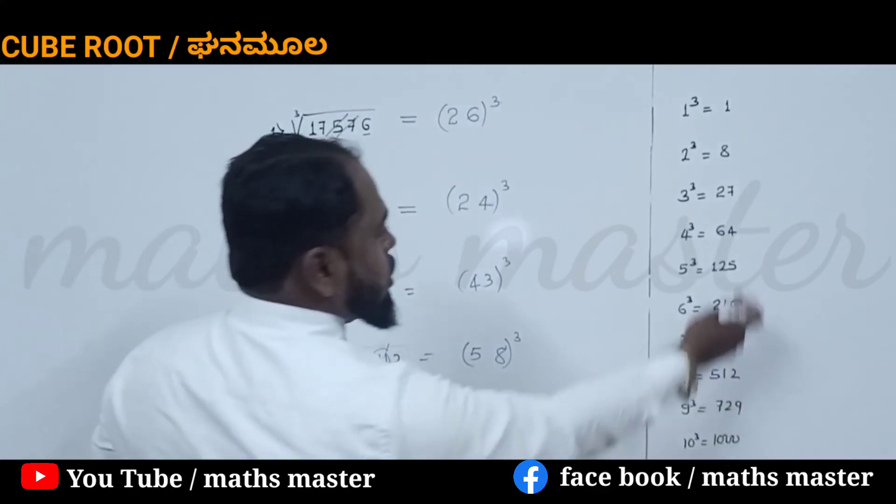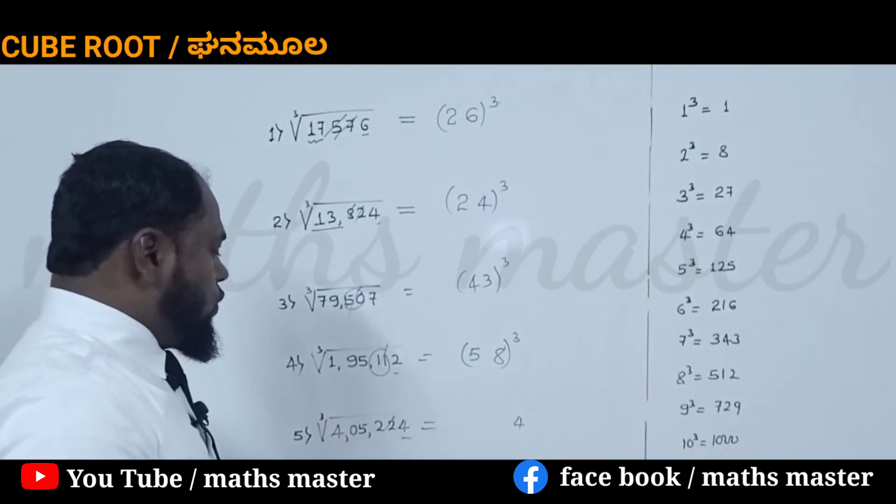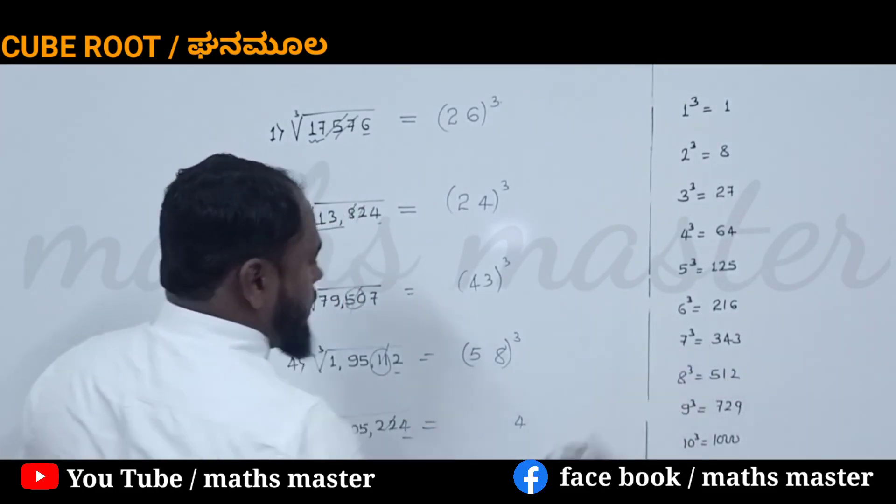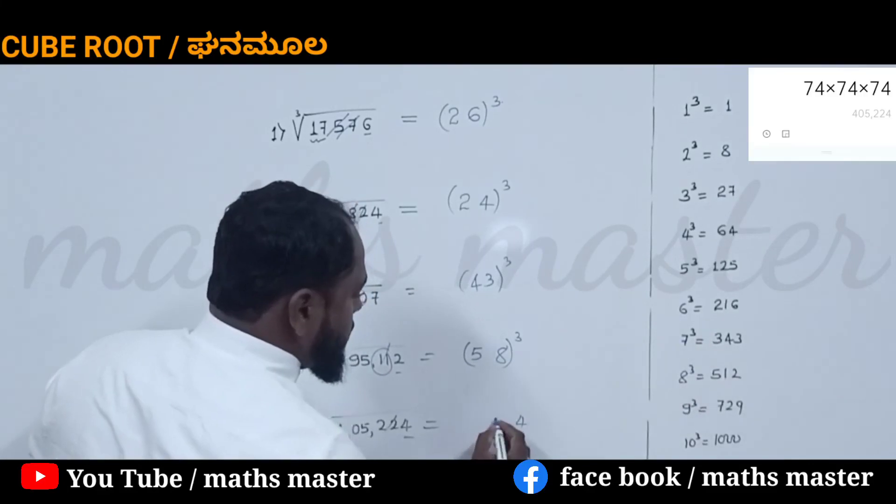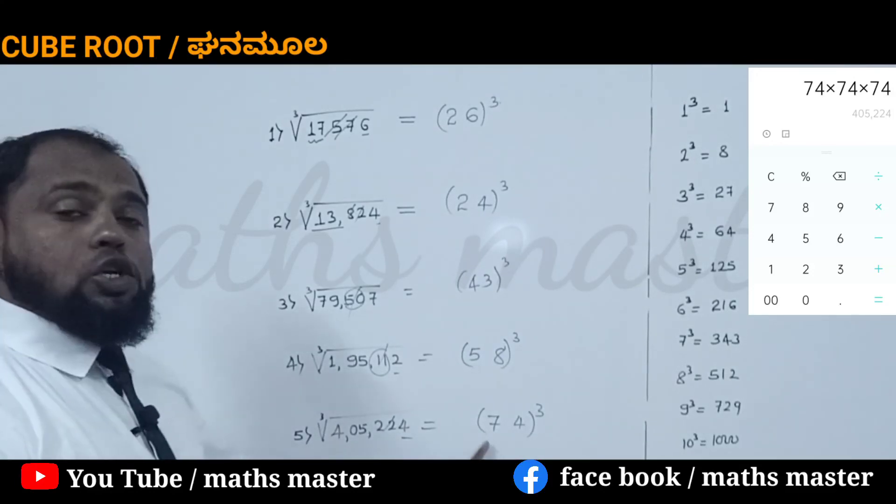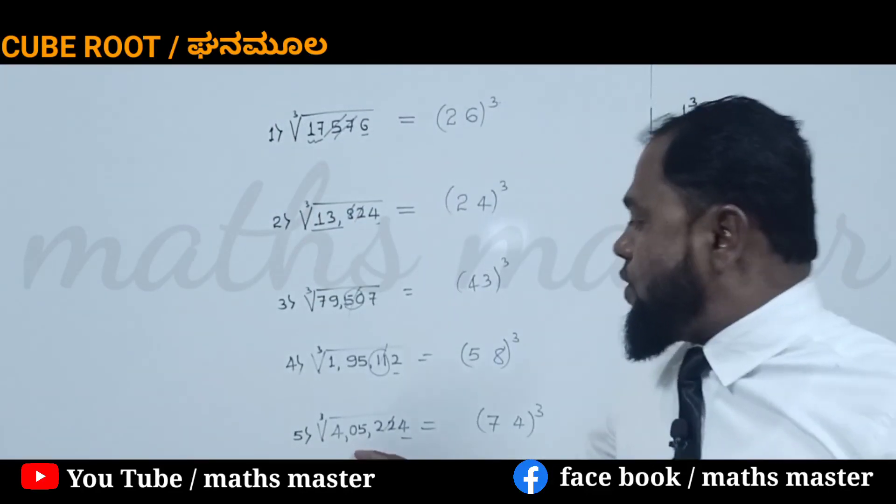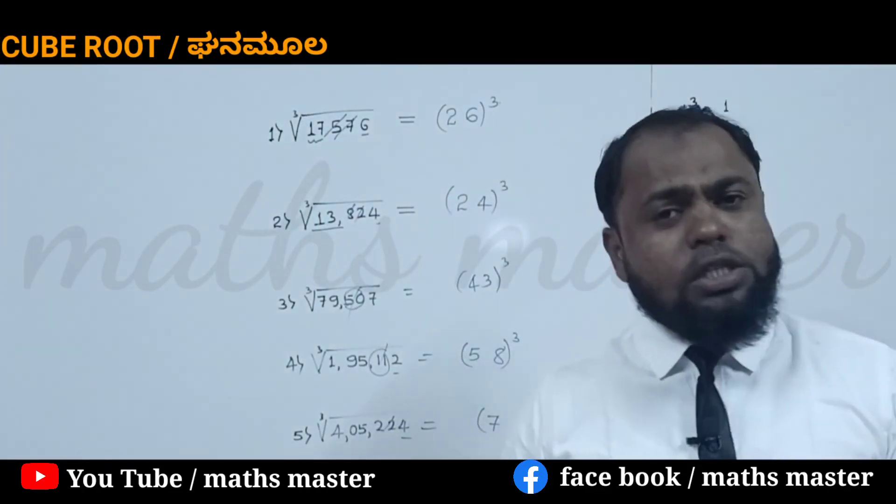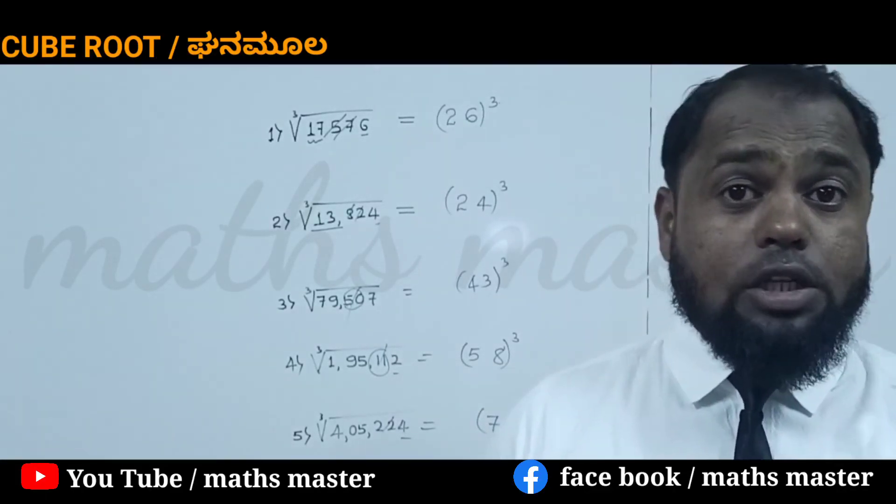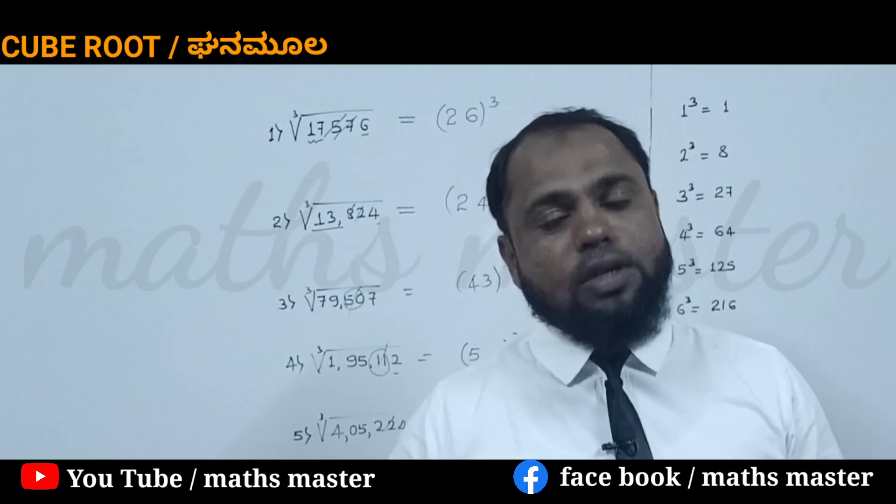4 is in unit place, so 4 will be in the answer. Then we leave two digits. The remaining is 405. The cube nearest to 405 is 343, which is 7 cubed. So it is a cube of 74. If we calculate 74 × 74 × 74, definitely we will get 4,05,224. So this is how we can calculate very easily cube roots and square roots. I have given that in the last video. You can see that video in the description box.